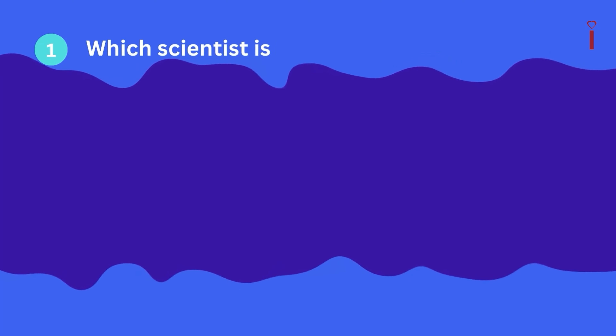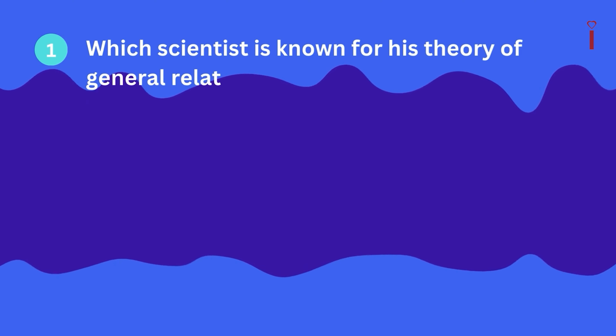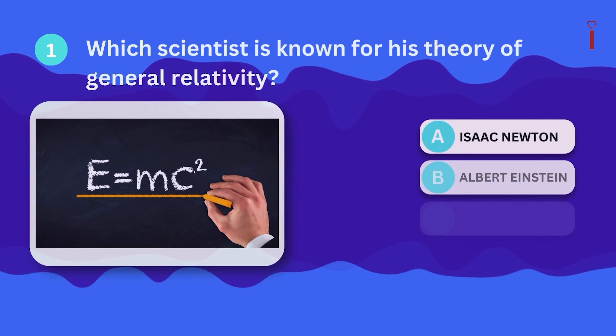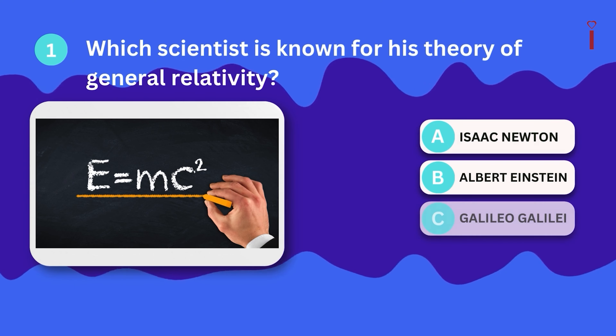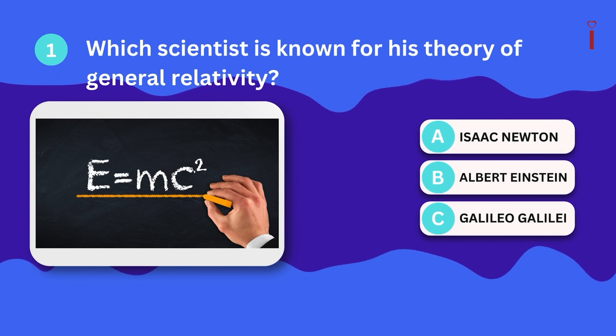Question 1: Which scientist is known for his theory of general relativity? A. Isaac Newton, B. Albert Einstein, C. Galileo Galilei.